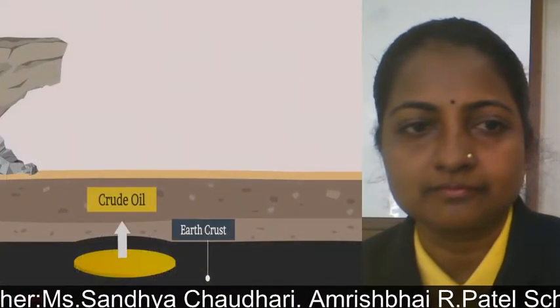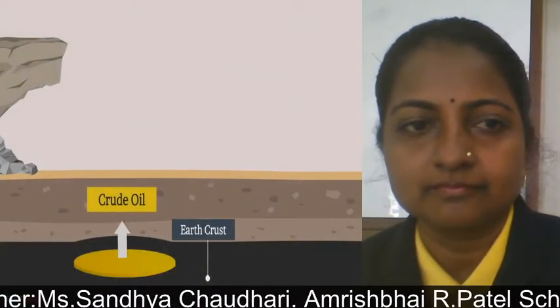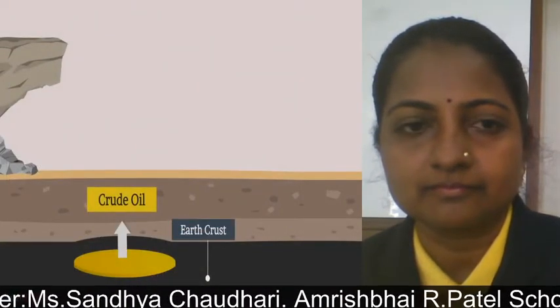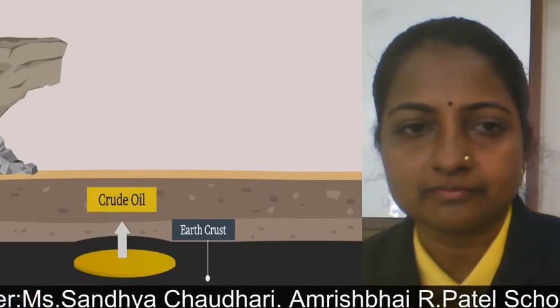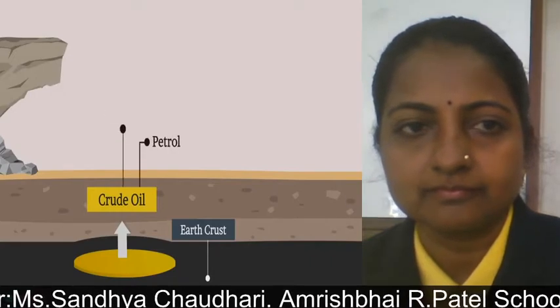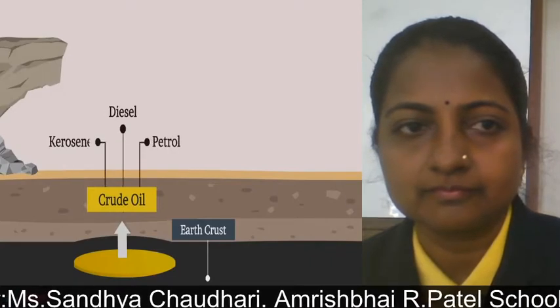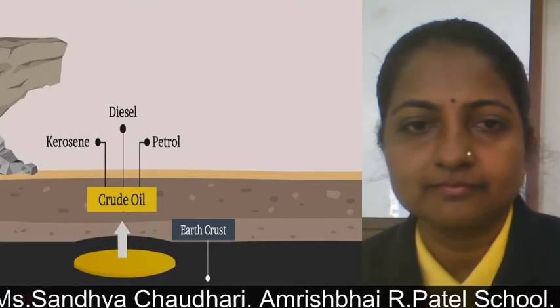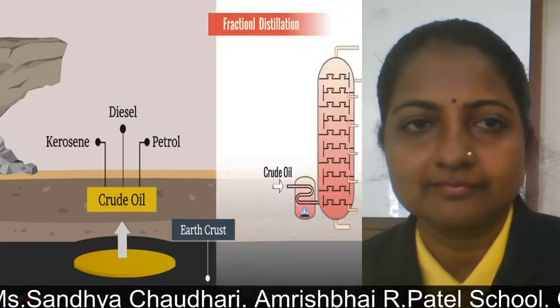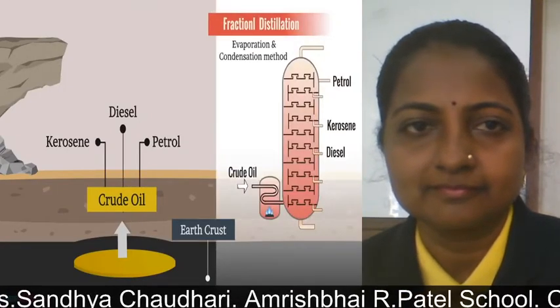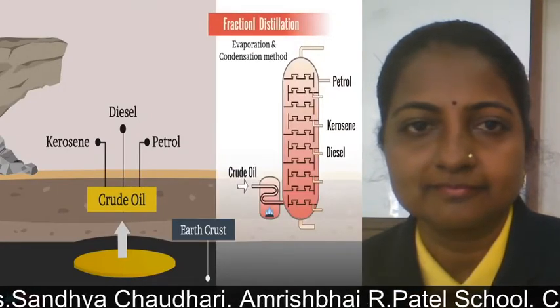From the earth's crust, we get crude oil. It is a mixture of various components such as petrol, diesel, kerosene, etc. These components are separated with the help of the evaporation and condensation method.